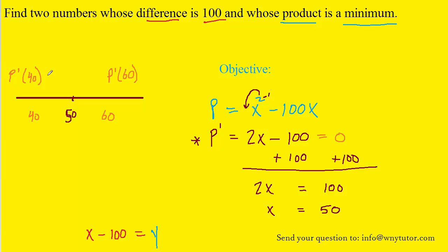When you plug 40 into P prime, you will get a result that is less than zero, it's negative. When you plug in 60, you will get a result that is greater than zero or positive. Now when the derivative of a function is less than zero, that means the function itself is decreasing, and we can show that with a downward sloping arrow. When the derivative is positive, the original function is increasing, which we can show with an upward sloping arrow.